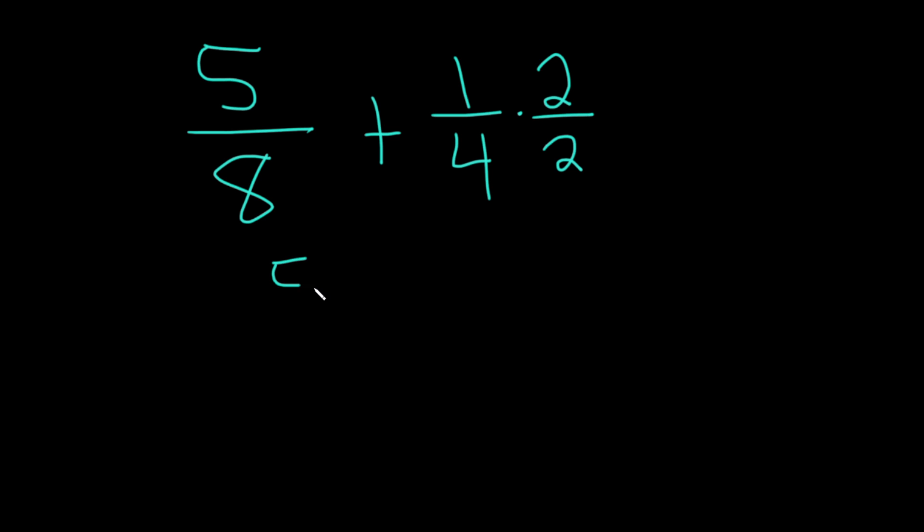So this becomes 5 over 8 plus 2 times 1 is 2. 2 times 4 is 8. So now you have 5 over 8 plus 2 over 8. 5 plus 2 is 7, so you get 7 over 8.